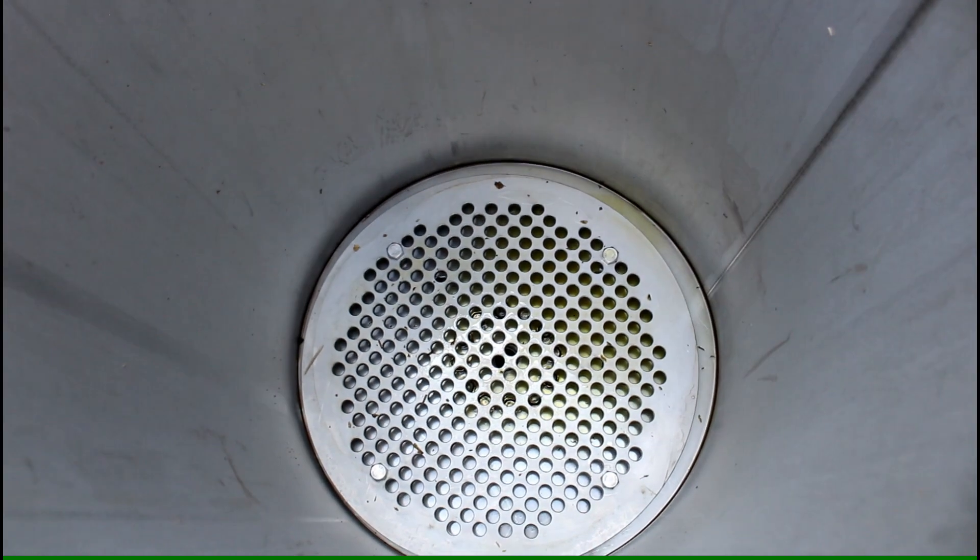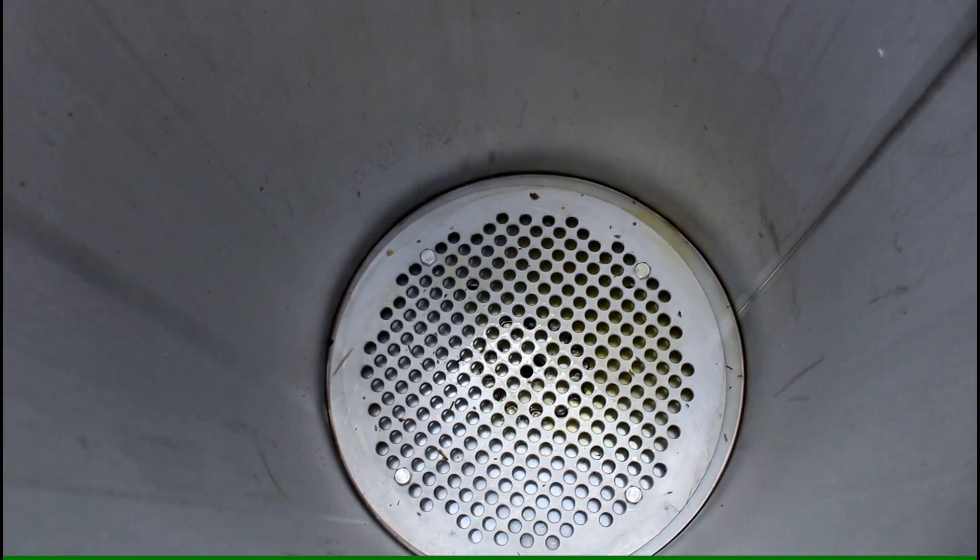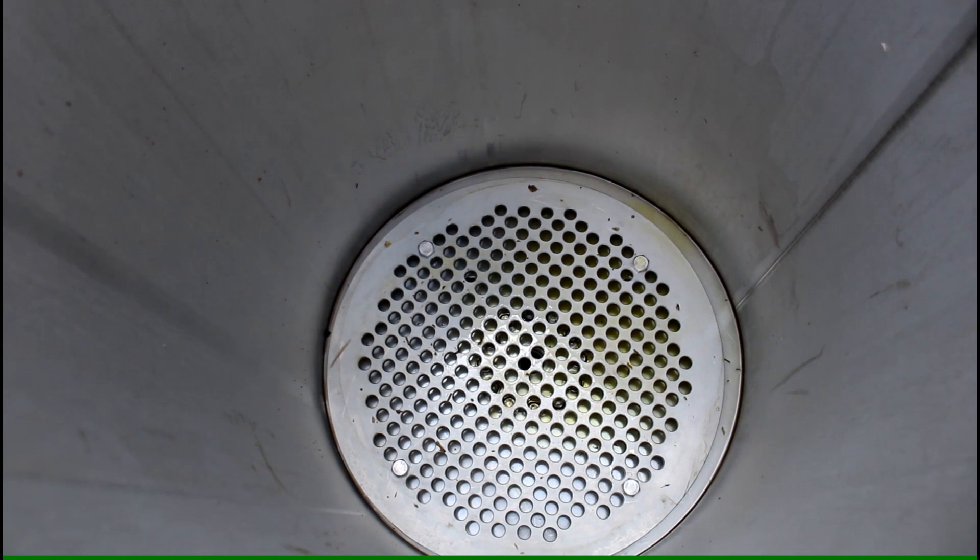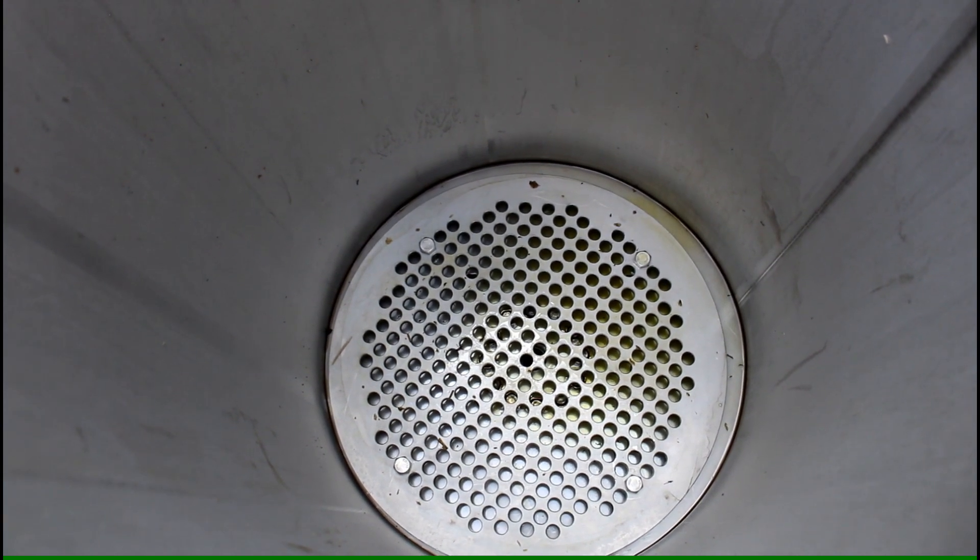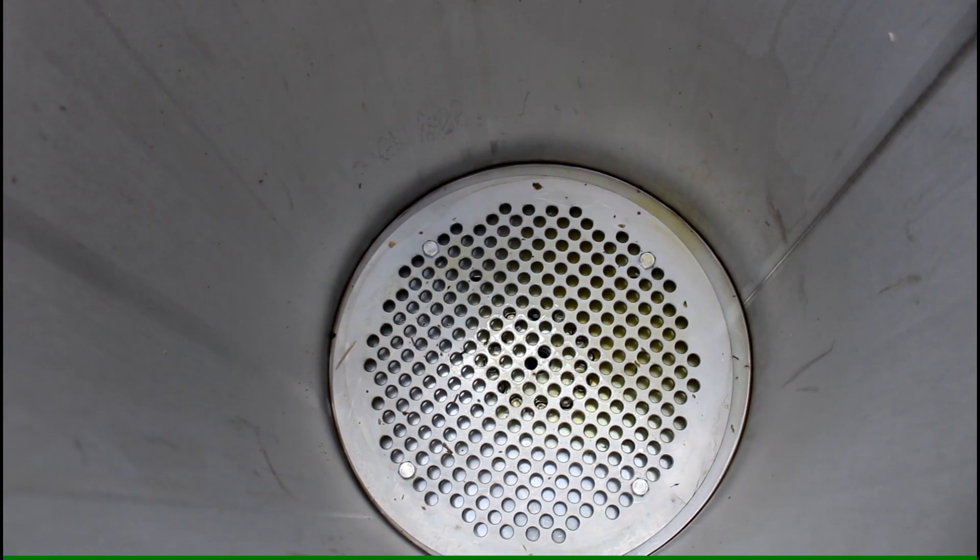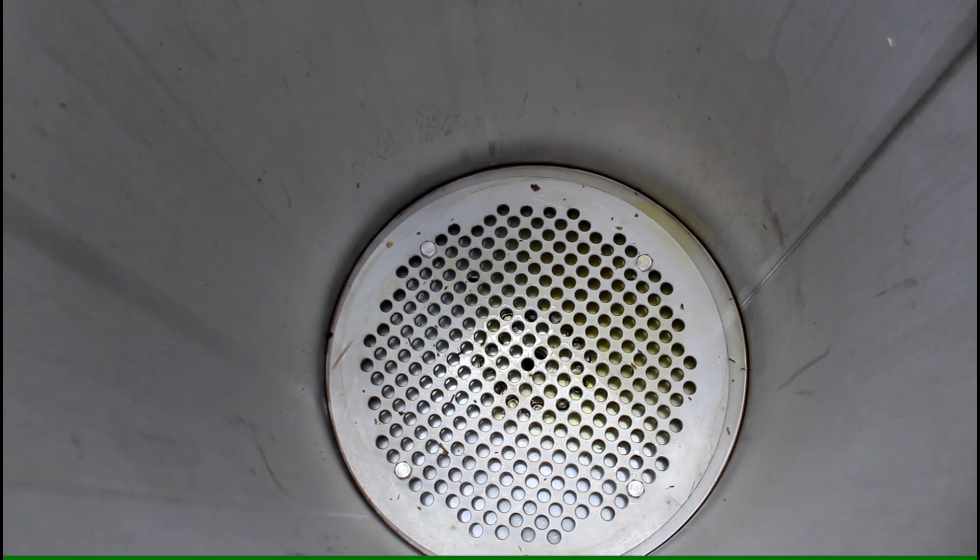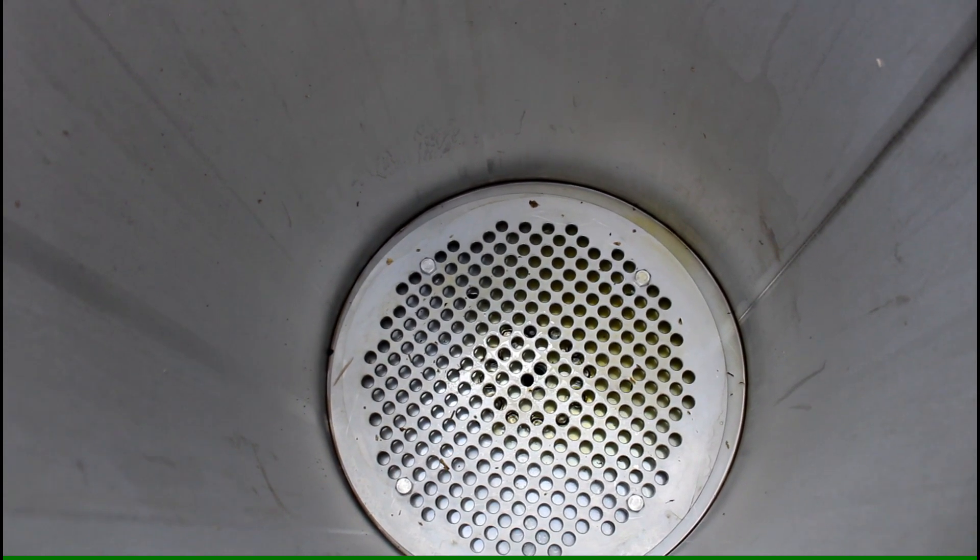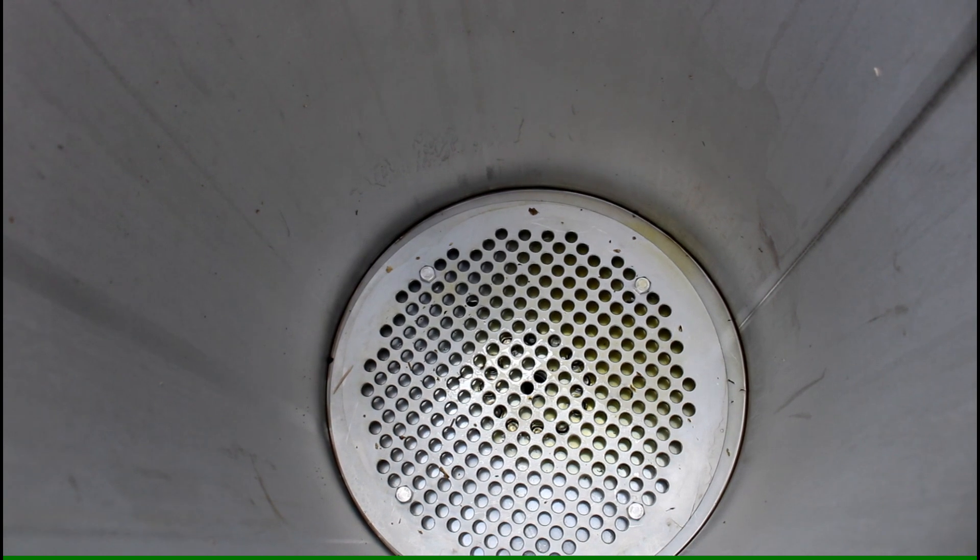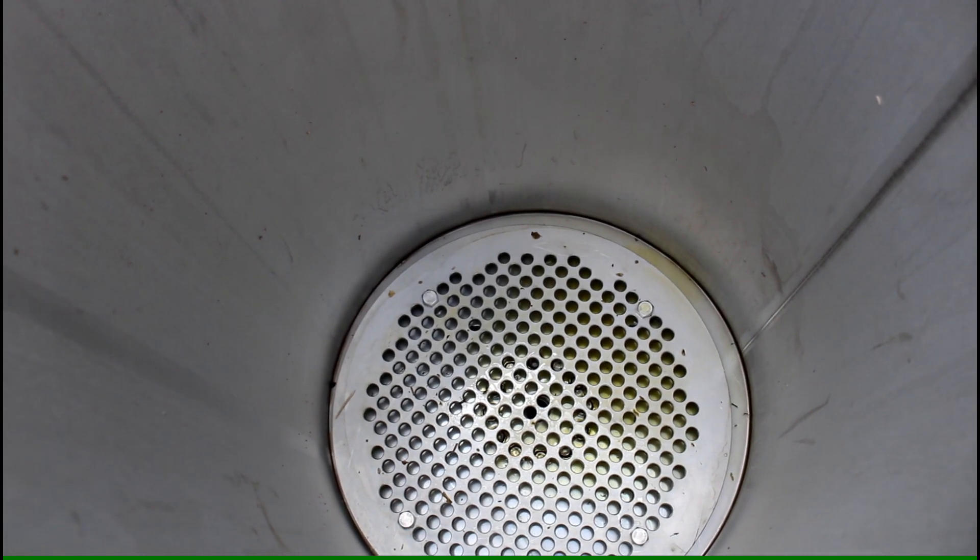Now let's have a look inside these herbal extraction tanks here. You see at the bottom there is a sort of metal plate with lots of holes inside. This is because if for example the herbs would just be totally on the bottom, they would clog up the system and there would be no flow through.